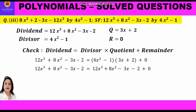Further we write the dividend as it is: 12x³ plus 8x² minus 3x minus 2. Then we simplify by multiplying the two binomials — taking the first term of the first binomial and multiplying with both terms of the second, then multiplying minus 1 with both terms of the second binomial.